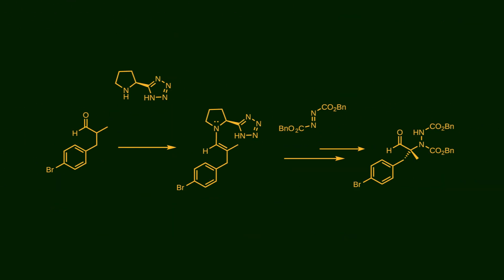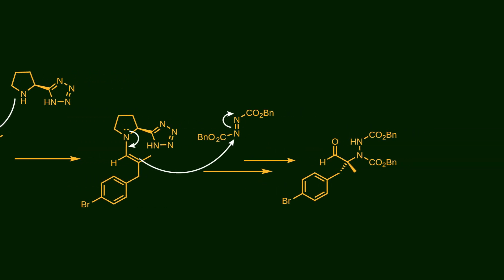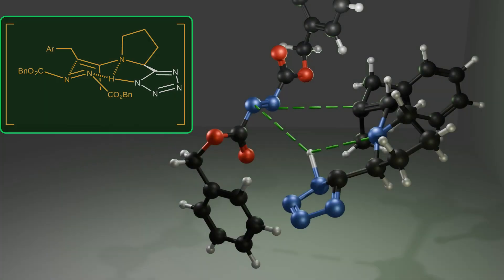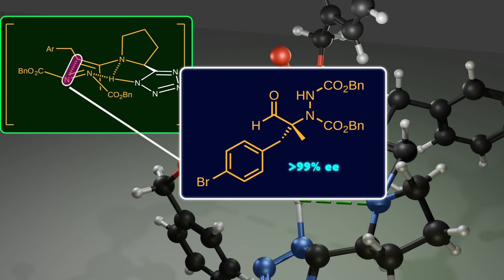Mechanistically, chiral proline reacts with the enolizable aldehyde to form an enamine. Then the nucleophilic carbon of the enamine attacks one of the nitrogens in diazine. Again, this forms a chair-like transition state where there is a hydrogen bond between the nitrogen of the tetrazole moiety and the nitrogen of the diazine. On the other side of the chair, the enamine's carbon attacks the electrophilic nitrogen. After hydrolysis, the chiral center is correctly introduced into the molecule with high enantioselectivity.